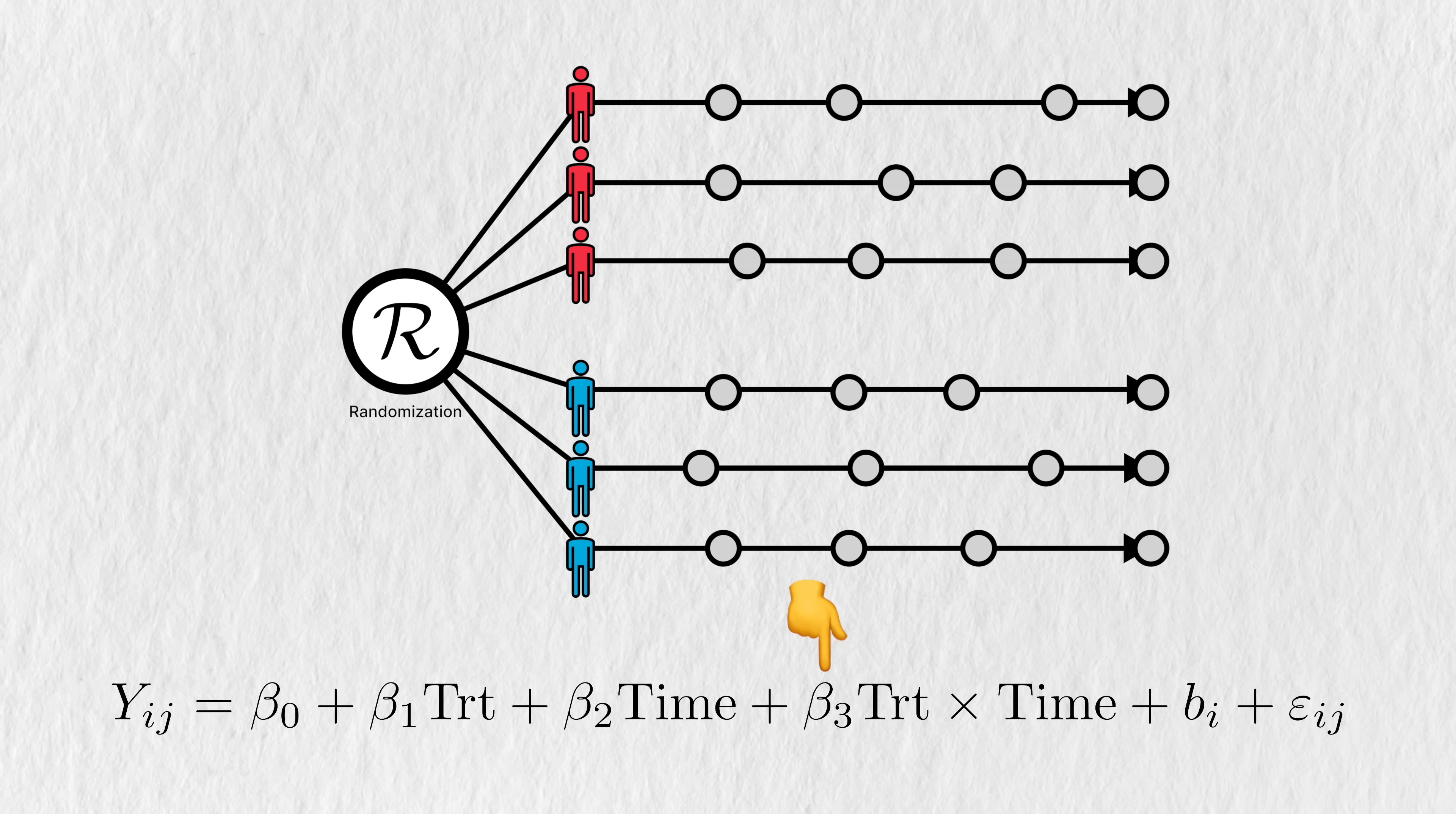The parameter we're interested in is the one associated with the interaction term. If this were significantly different from zero, then this signals that the treatment is causing some extra change over time. Hopefully a beneficial one. This type of model is so common in longitudinal data analysis that it's been given a special name: Mixed Models for Repeated Measures, or MMRM.